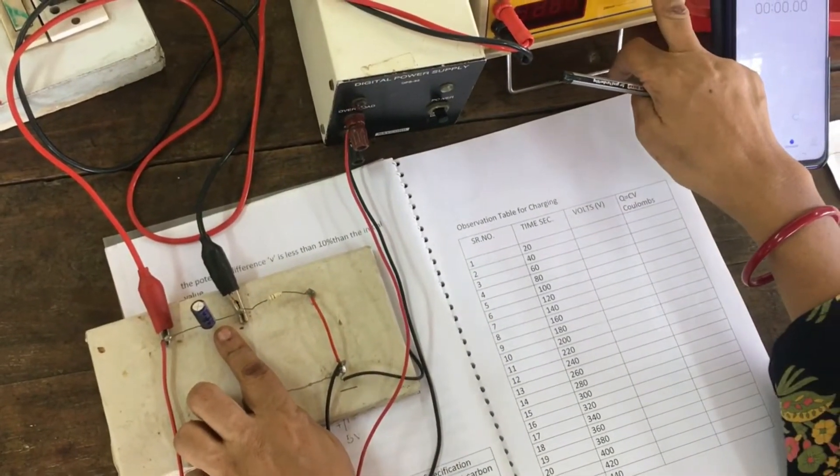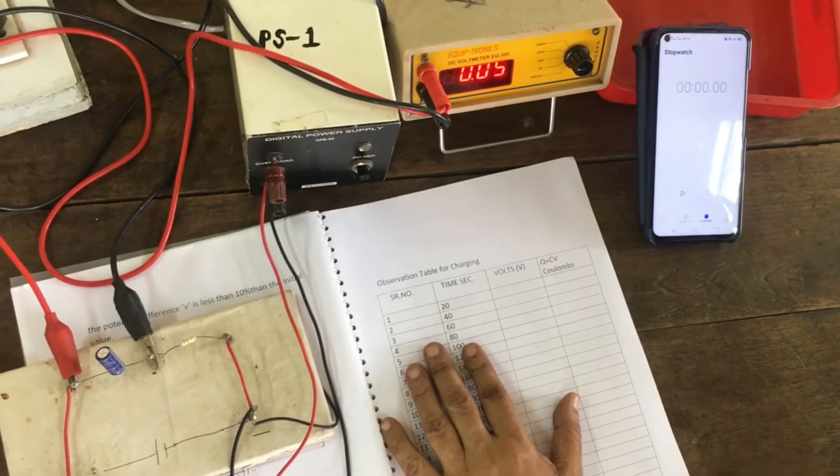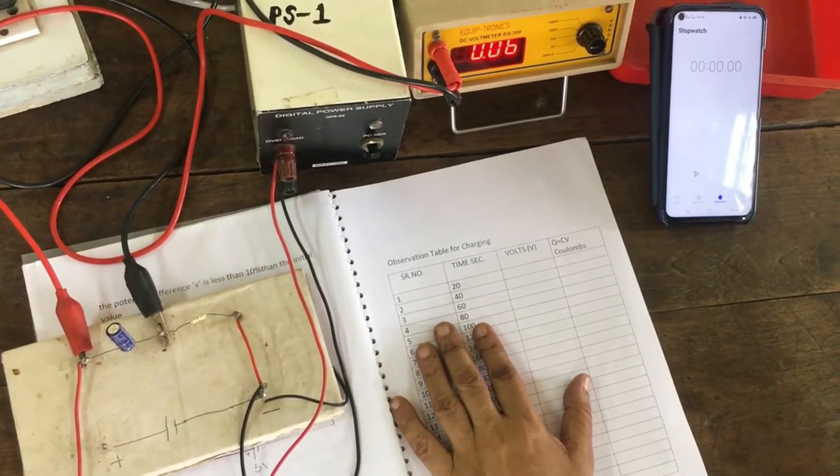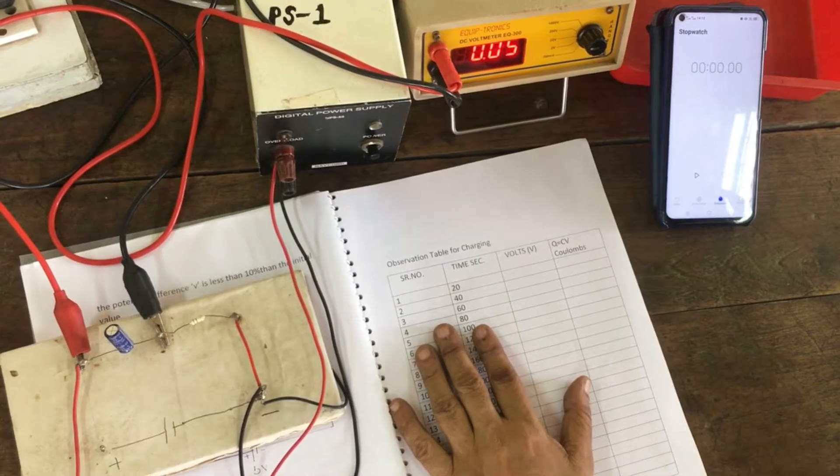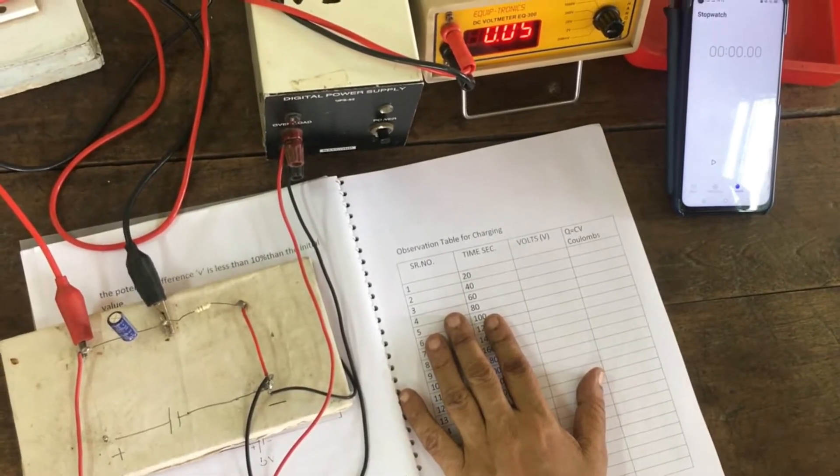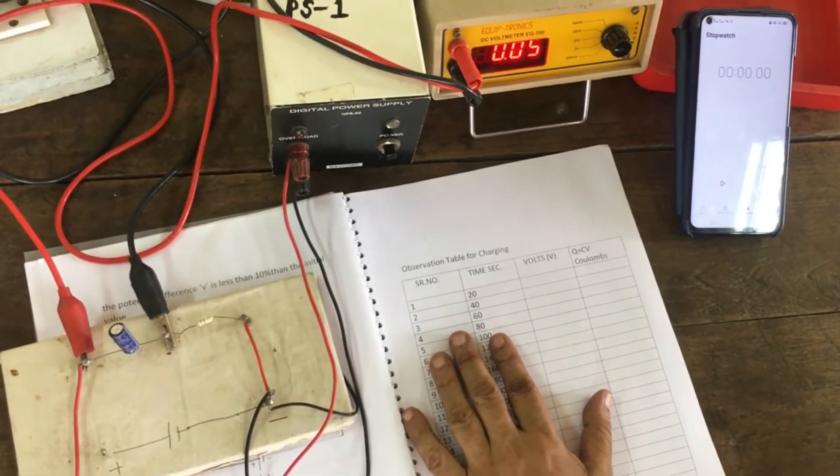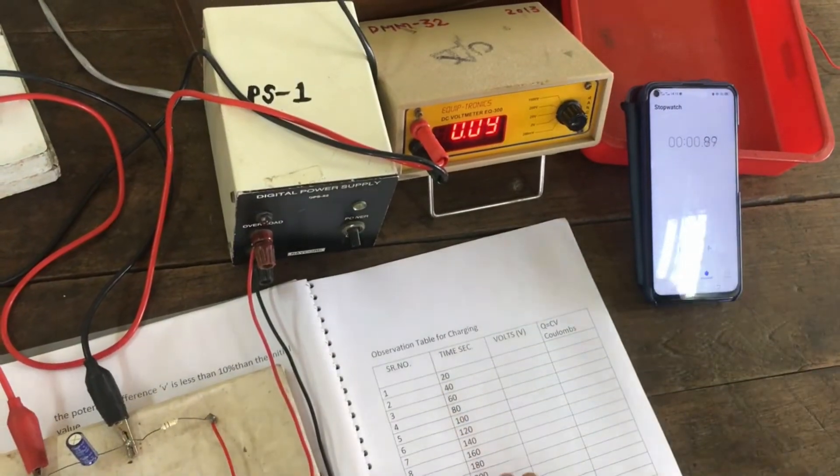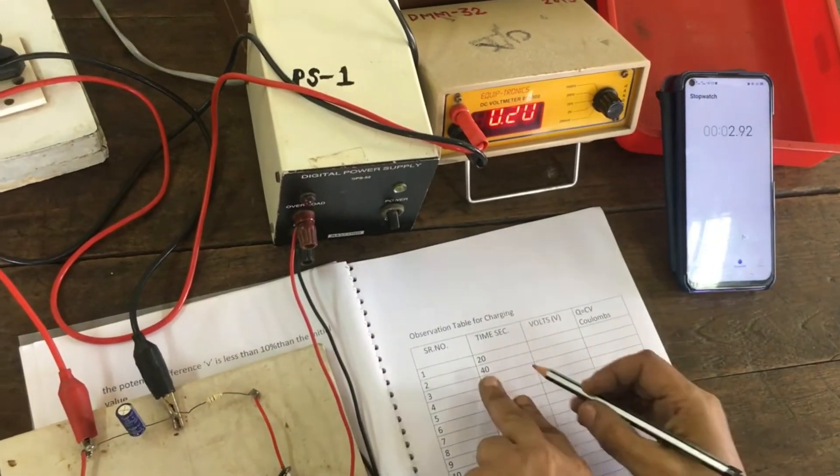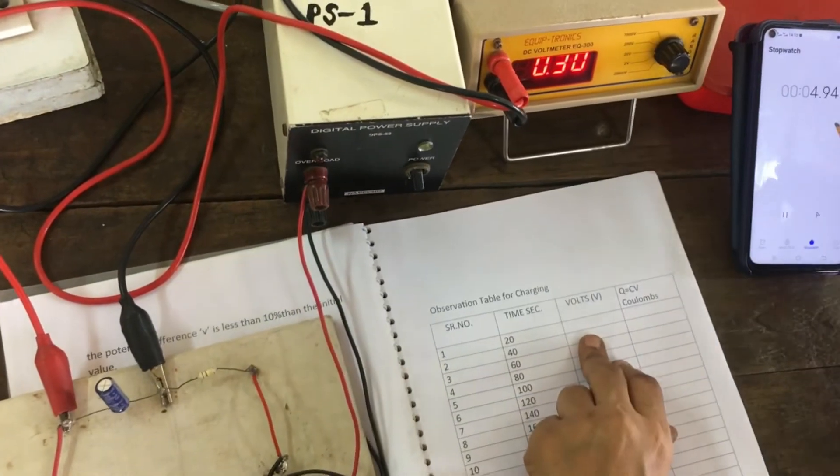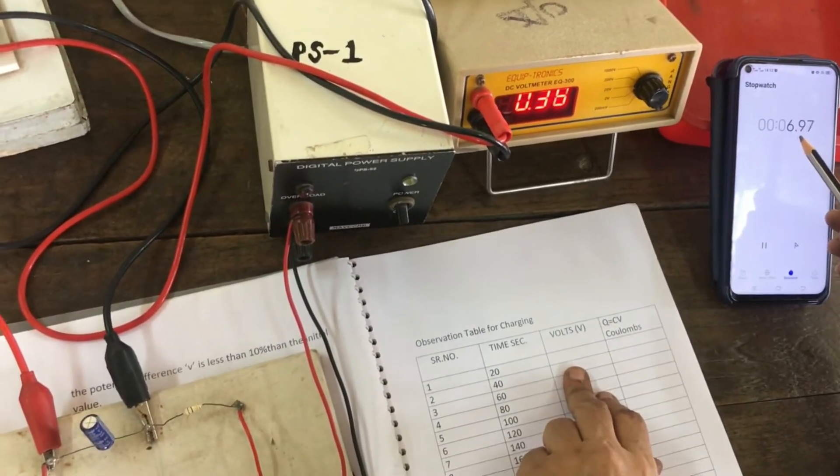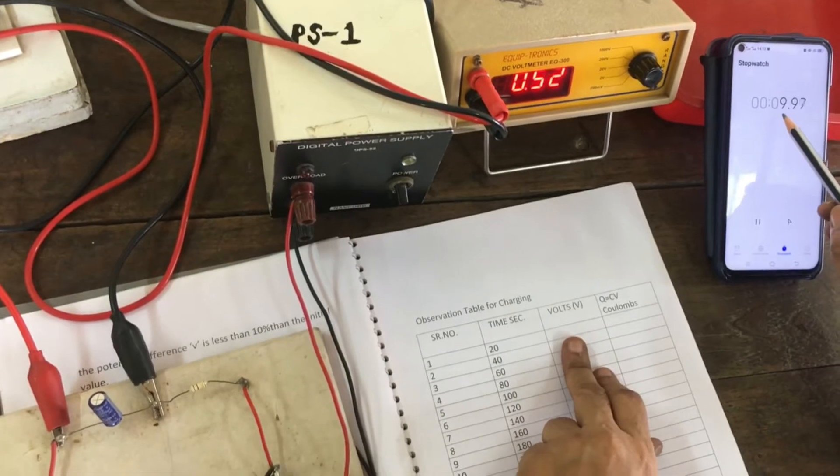This is your digital multimeter. Now, we will take the reading with the power supply and stopwatch together, every 20 seconds, we are measuring the voltage across capacitor. Now, see here. We take the voltage measurement. We are taking at 20 seconds.